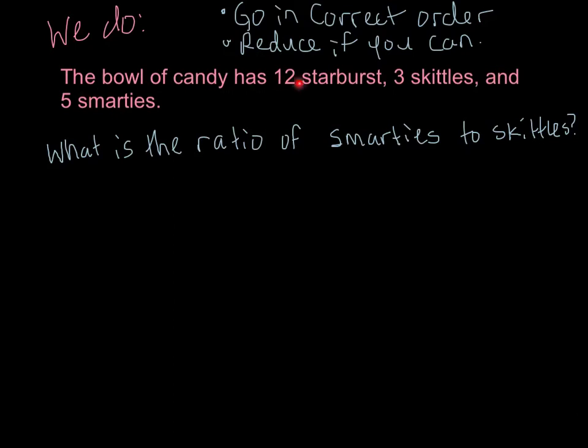This says the bowl of candy has 12 Starburst, 3 Skittles, and 5 Smarties. What is the ratio of Smarties to Skittles? Go in the correct order means Smarties first, Skittles second, because that's the way the question asked us. We look at Smarties, there's five of them. So you write five. I can write it that way, or I can write it this way. We'll do it all three ways in your notes, or you can write it as a fraction.